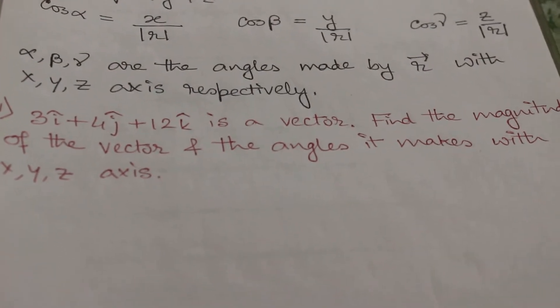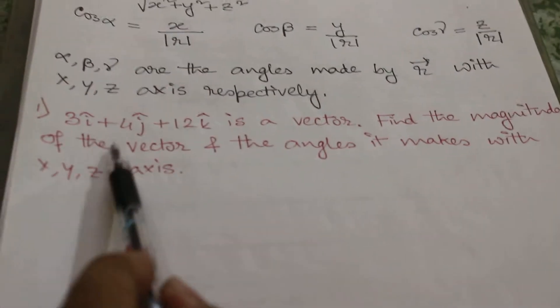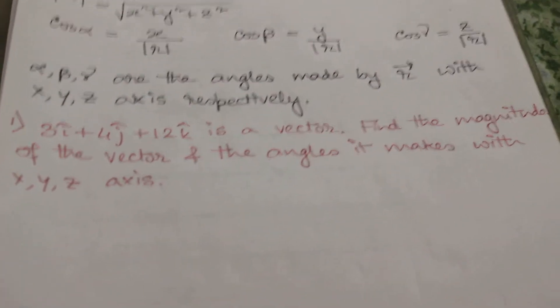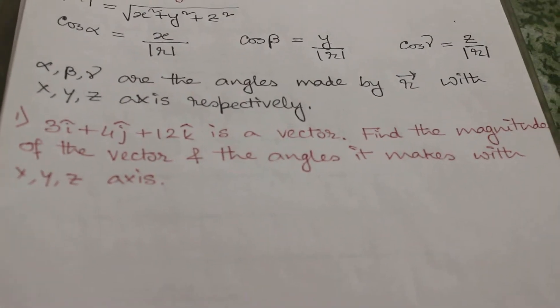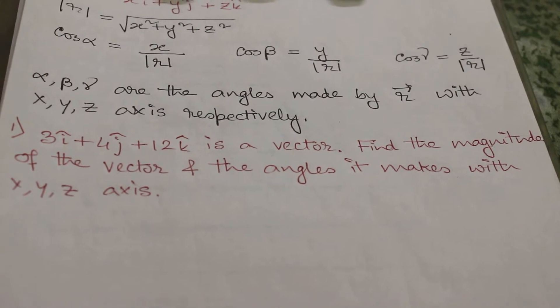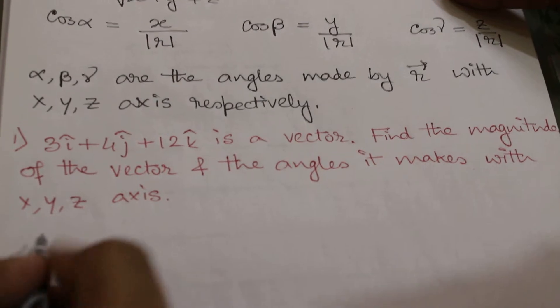So let's start elaborating this with one example. 3 i cap plus 4 j cap plus 12 k cap is a vector. Find its magnitude and the angle it makes with x, y, z axis. So first what we will do is calculate its magnitude.